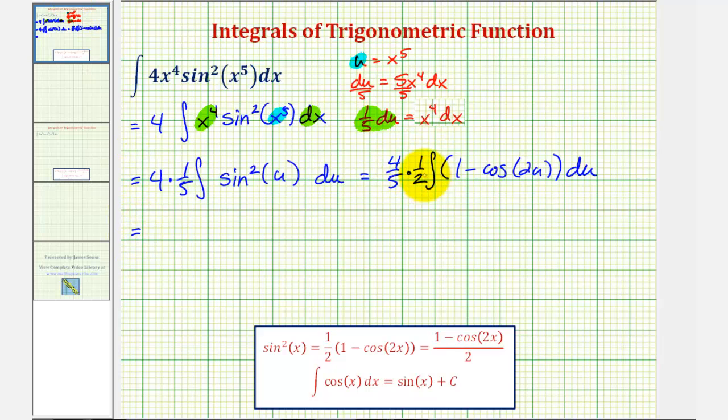Notice here we have four-tenths or two-fifths. The antiderivative of one with respect to u would just be u, and then you'd be careful here.